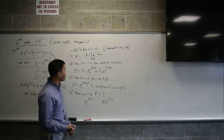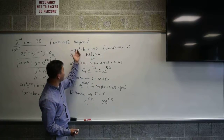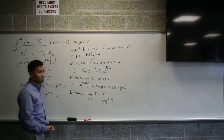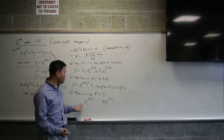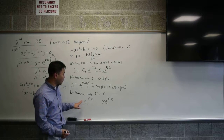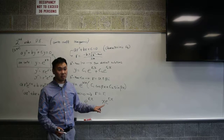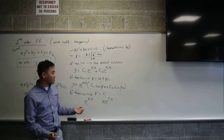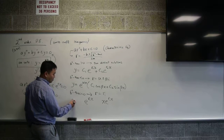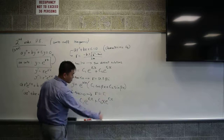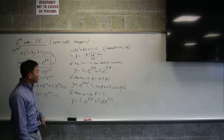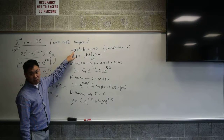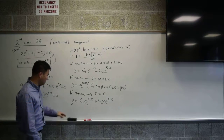You can just check by plugging x·e^(r1·x) into the original equation to verify it satisfies it. Then compute the Wronskian of e^(r1·x) and x·e^(r1·x), check that it's not zero to confirm linear independence, and then the general solution is y = c1·e^(r1·x) + c2·x·e^(r1·x). So altogether you have three different types of solution depending on the discriminant of the characteristic equation.